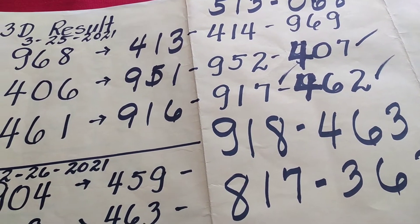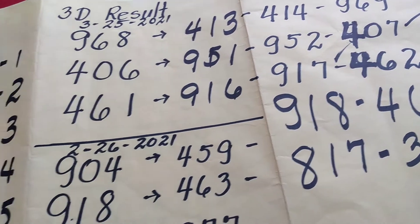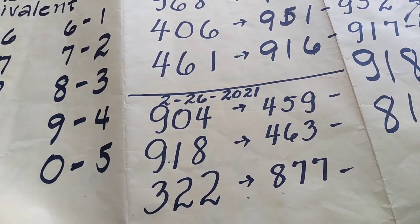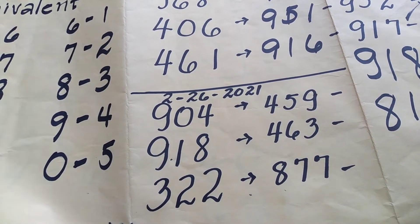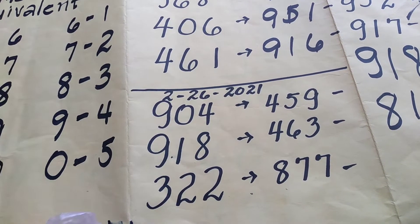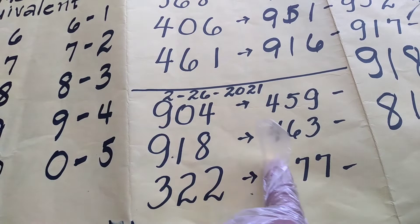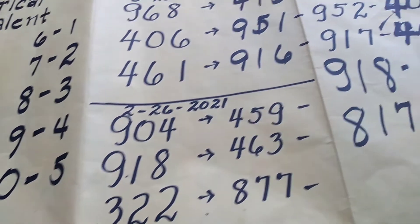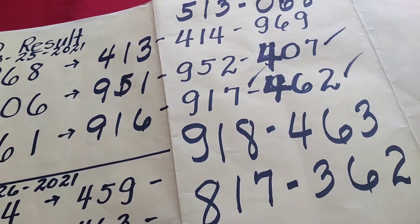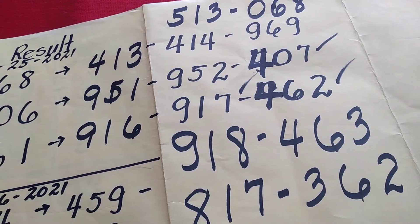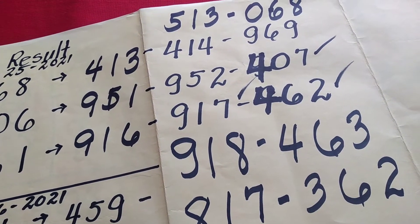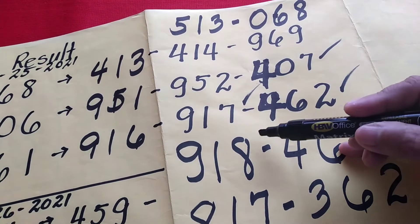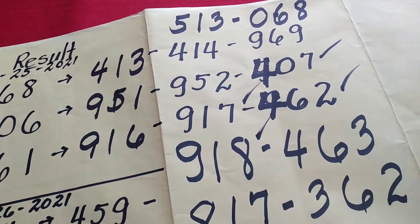Yung 9, 1, 8. Pero nung previous ito, 9, 1, 8 ay naging 4, 6, 3. So isasali ko ito sa probable ngayon: 9, 1, 8.